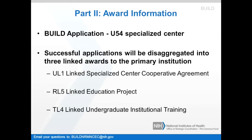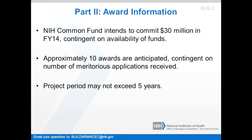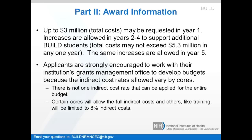Successful applications will be disaggregated into three linked awards to the primary institution: the UL1 linked specialized center cooperative agreement, the RL5 linked education project, and the TL4 linked undergraduate institutional training. The NIH Common Fund intends to commit $30 million in fiscal year 2014, contingent on the availability of funds. There will be approximately 10 awards, contingent on the number of meritorious applications received. The project period may not exceed five years. Up to $3 million in total cost may be requested in year one. Increases are allowed in years two to four to support additional BUILD students. The total cost may not exceed $5.3 million in any one year, and the same increases are allowed in year five.